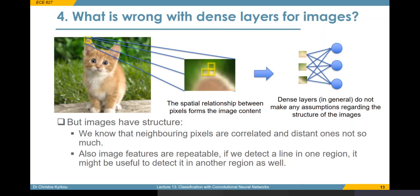We also know that pixels close to each other are more correlated than pixels that are further apart. And also, if there is some structure in one part of the image and we are able to find it, it might also be beneficial to search for the same structure in another part of the image. For example, if we find a line where one ear of the cat is, to detect the other one we could possibly use the same features. So there is some sort of feature reuse.